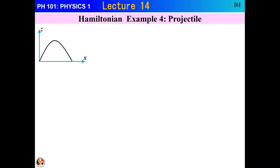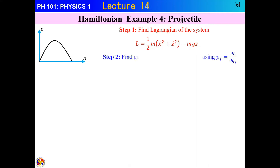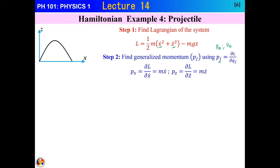Now let's take a projectile motion example in the xz-plane. The Lagrangian is L = ½m(ẋ² + ż²) − mgz. We have two generalized coordinates x and z, so we'll have p_x and p_z. Taking partial derivatives: p_x = mẋ, so ẋ = p_x/m; and p_z = mż, so ż = p_z/m.